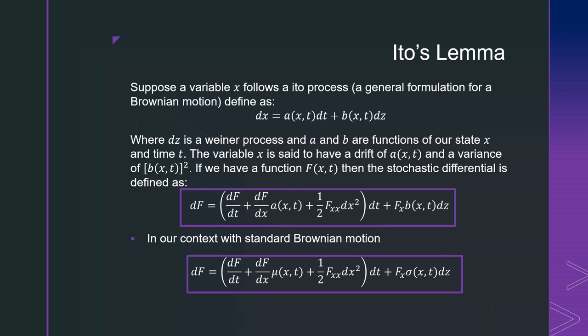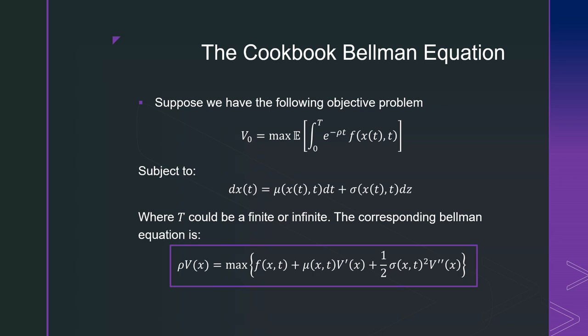Now, after having all these facts, we want to produce something usable from this. And this is really where this all accumulates together. We're going to have the following objective problems that we're going to face. We're going to be maximizing some either finite or infinite horizon problem in continuous time, subject to our state variables following a Brownian motion.